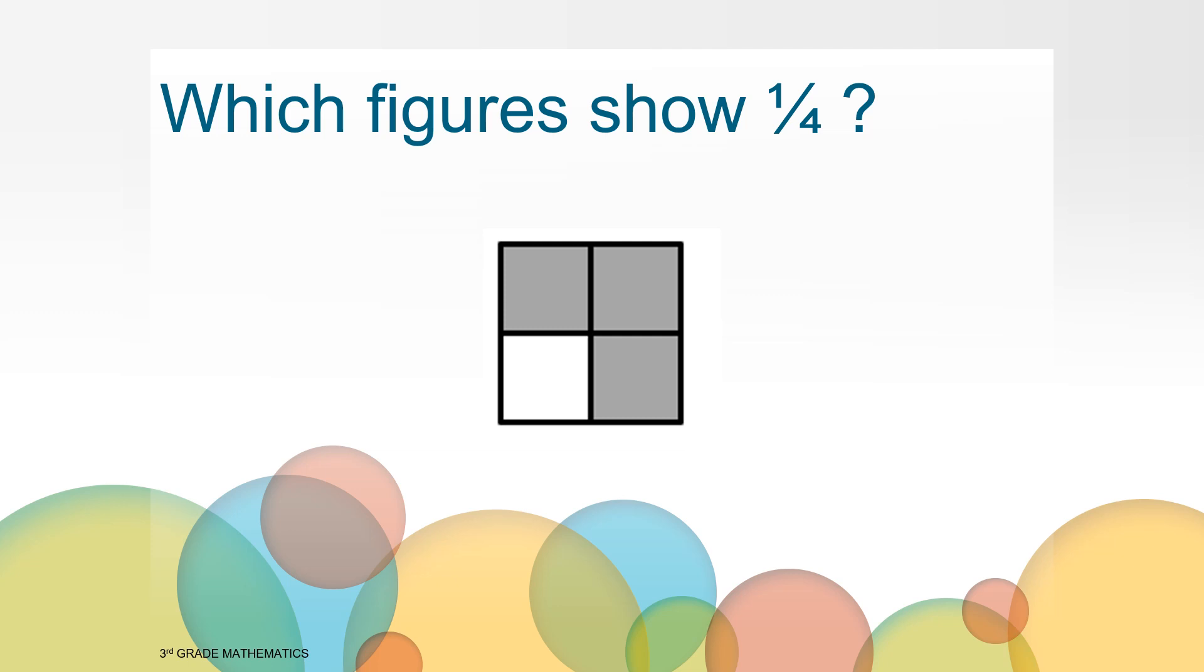Let's think about what we notice. I see that this is a square, and it is split into four equal parts, so each part is one fourth. At first glance you may have said no, it does not show one fourth because three fourths is shaded. What fraction is not shaded? That's right, one fourth is not shaded, so this does show one fourth not shaded.